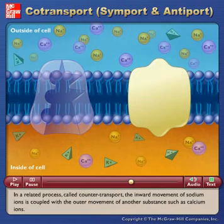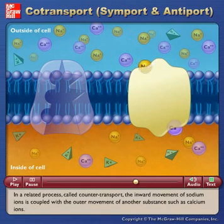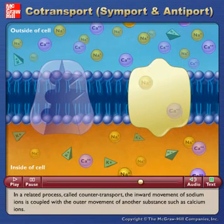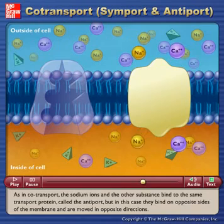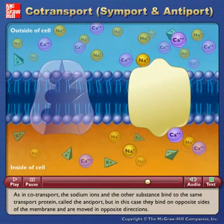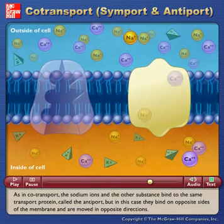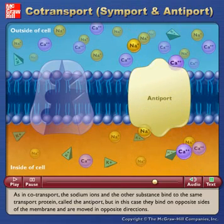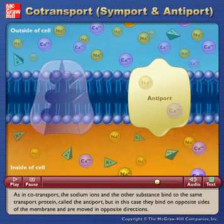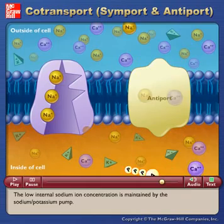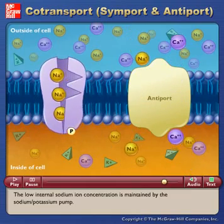In a related process called counter transport, the inward movement of sodium ions is coupled with the outward movement of another substance, such as calcium ions. As in co-transport, the sodium ions and the other substance bind to the same transport protein, called the antiport, but in this case they bind on opposite sides of the membrane and are moved in opposite directions. The low internal sodium ion concentration is maintained by the sodium-potassium pump.